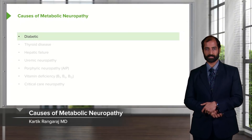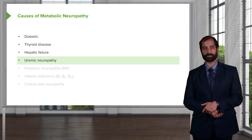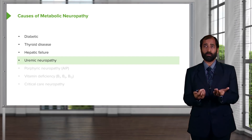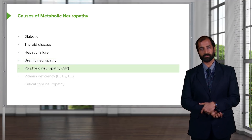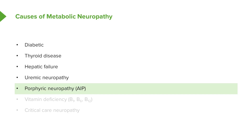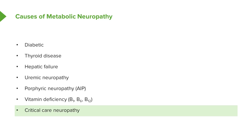Causes of metabolic neuropathy: diabetes is always at the top of the list, as is thyroid disease and hepatic failure. Kidney failure causes uremic neuropathy — an important one. Porphyric neuropathy relates to biochemical pathologies in the porphyria pathway on the way to producing heme, including acute intermittent porphyria. Vitamin deficiencies — B1 (thiamine), B6, or B12 — are also causes, as B6 is required for proper myelination. Critical care neuropathy rounds out these important metabolic etiologies.